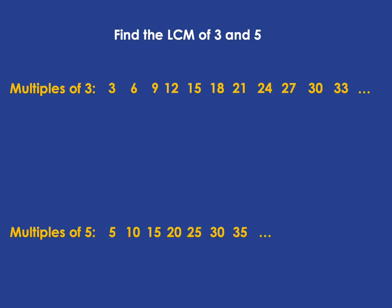And now we're looking for the common multiple, so a number that's in both those lists, and we're looking for the lowest one, so the smallest number that's in both of those lists, and that is 15. And so the lowest common multiple of 3 and 5 is 15.